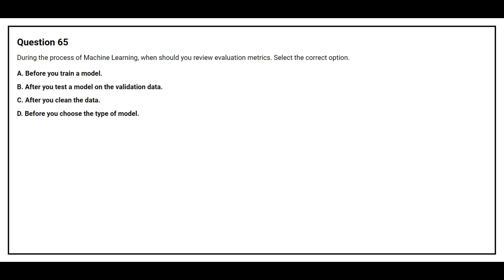Question 65: During the process of machine learning, when should you review evaluation metrics? Option A: Before you train a model. Option B: After you test the model on the validation data. Option C: After you clean the data. Option D: Before you choose the type of model. The correct answer is Option B: After you test the model on the validation data.